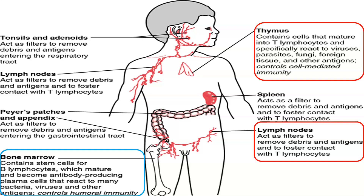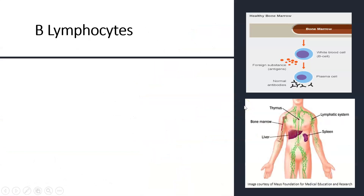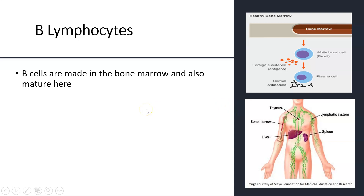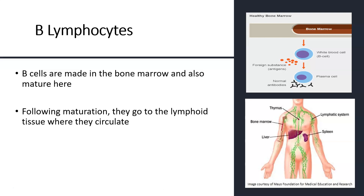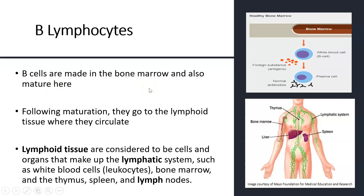B lymphocytes are made in the bone marrow, the same as T cells, but they also mature there. Following that maturation process, they go to lymphoid tissue — the lymphatic system — where they will circulate. Lymphoid tissue is considered to be the cells and organs that make up the lymphatic system, and that also incorporates organs such as the thymus, the spleen, and lymph nodes.